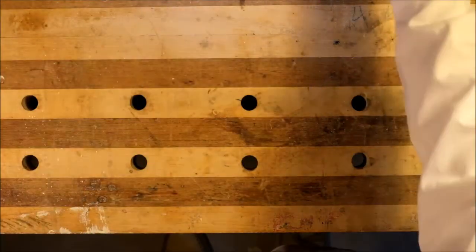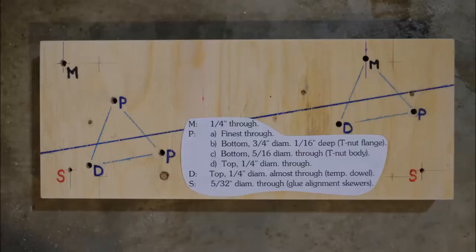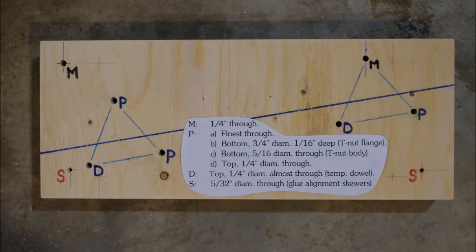Here's what needs to happen at the drill press. The holes marked M are one-quarter inch diameter through holes, they're the easy ones. The holes marked P as in Peter are going to have t-nuts installed and so they require a few steps. Start with a through hole using the finest diameter bit that'll make it all the way through the three boards. Then on the bottom panel bore a shallow relief for the flange of the t-nut, say a sixteenth of an inch deep and three quarters of an inch across.